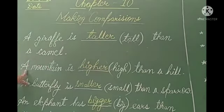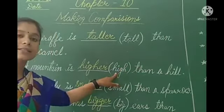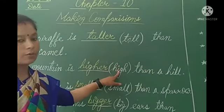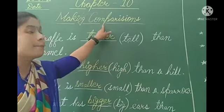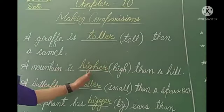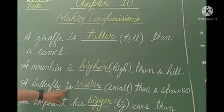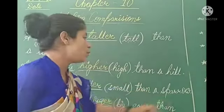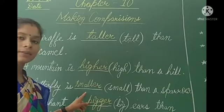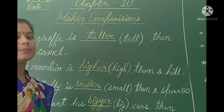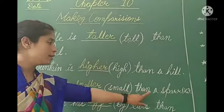Second: a mountain is blank than a hill. In the bracket, 'high' is given. The correct form — we add ER — is H-I-G-H-E-R, higher. So it becomes: a mountain is higher than a hill. Third: a butterfly is blank than a sparrow. 'Small' is given in the bracket, so we write smaller — S-M-A-L-L-E-R. A butterfly is smaller than a sparrow.